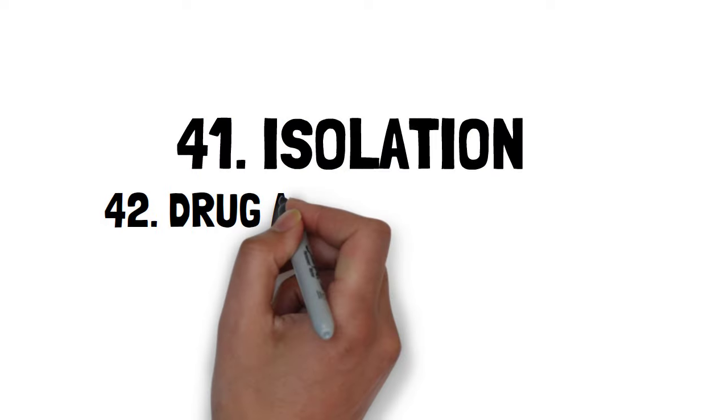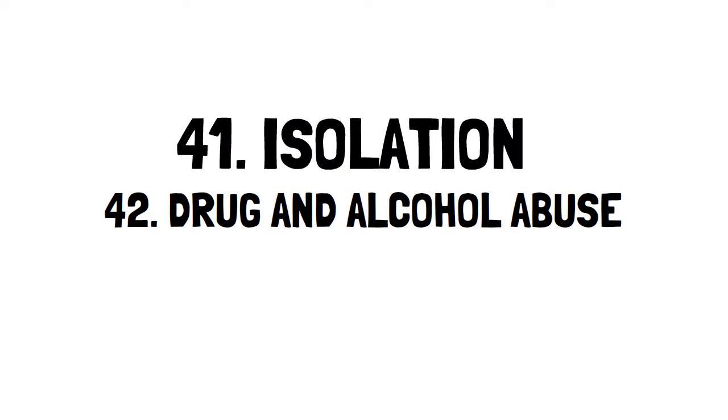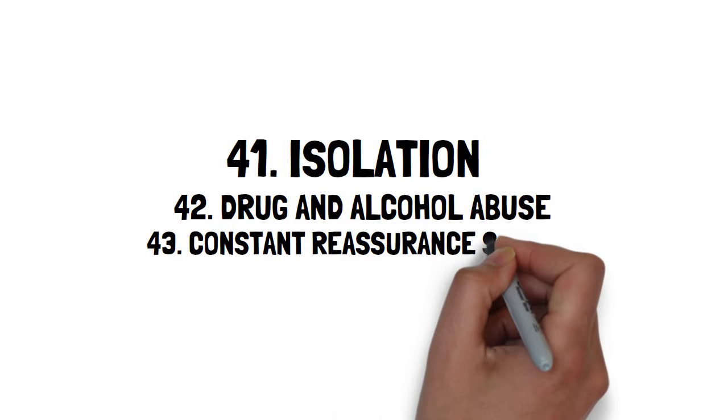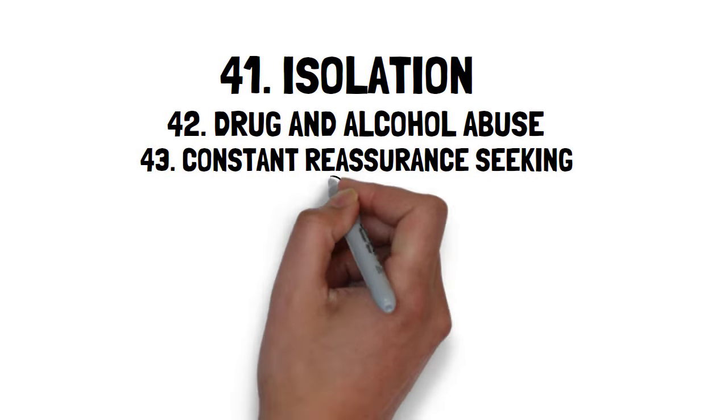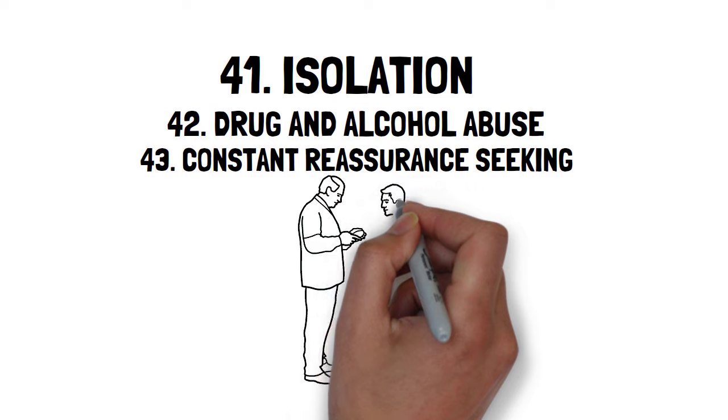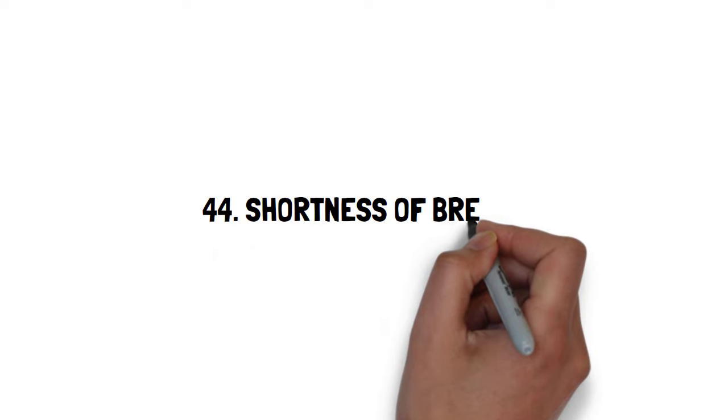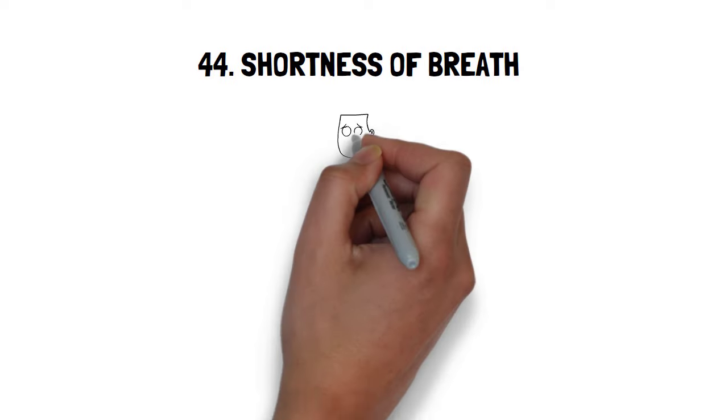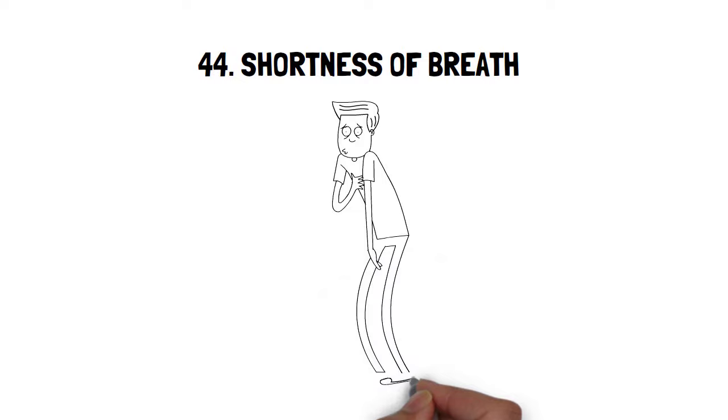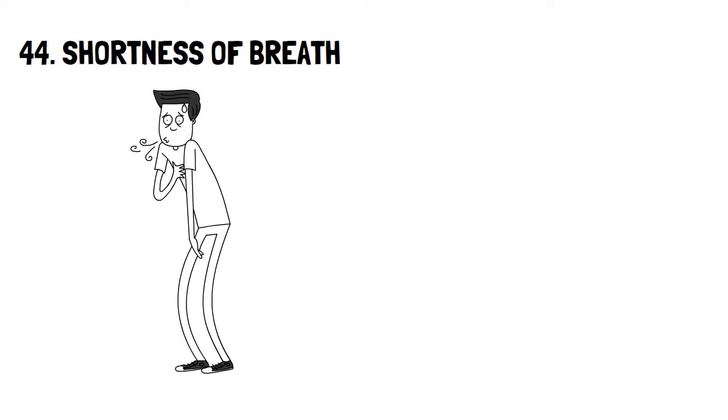Forty-one, loss of social contact and isolation. Forty-two, drug and alcohol abuse. Forty-three, constant reassurance seeking. Asking others to see if you're alright or if they have experienced this or that symptom and so on. Going to doctors multiple times over. And then shortness of breath. Another big one for me. I was so in tune with my breathing. I had the feeling I had to manually control it or else I wouldn't breathe at all.